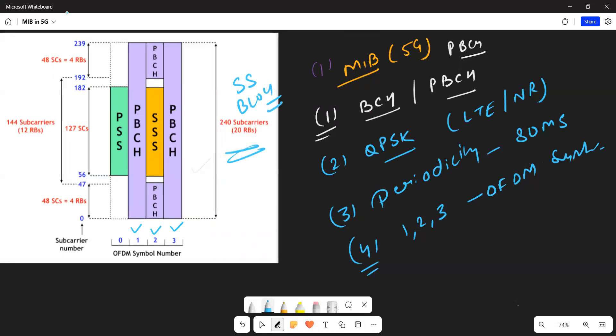SS block goes over 240 subcarriers or 20 RBs. If we talk about the very first OFDM symbol, it spans 240 subcarriers, meaning 0 to 239 subcarriers.